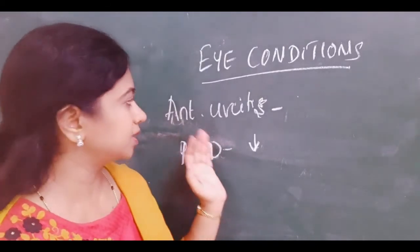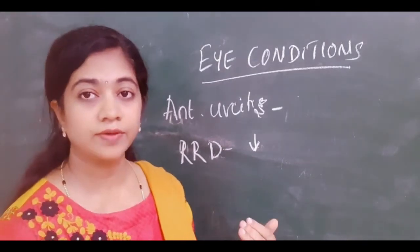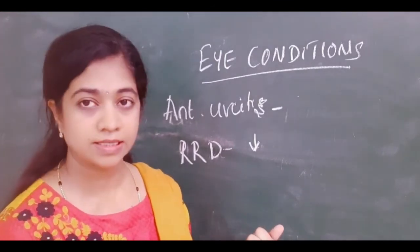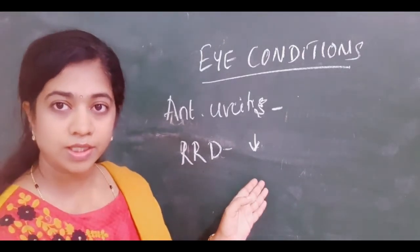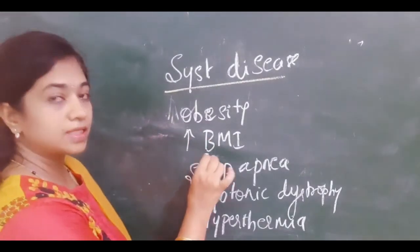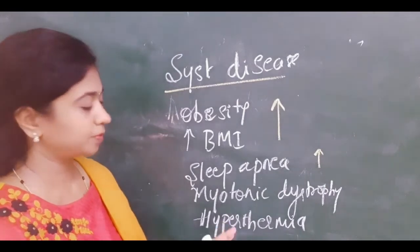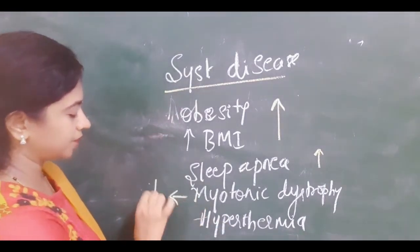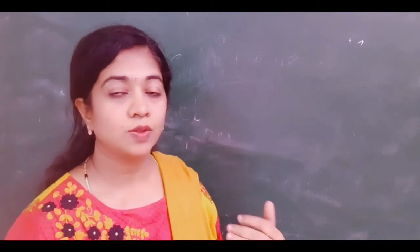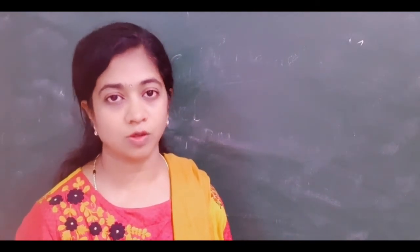Some eye conditions can also influence IOP. Anterior uveitis patients may have decreased IOP because of decreased aqueous production, or may have increased IOP because of release of inflammatory cells which block the trabecular meshwork. Rhegmatogenous retinal detachment patients will usually have decreased IOP. Some systemic diseases also influence IOP: obesity and increased BMI tend to raise IOP, sleep apnea patients have increased incidence of primary open-angle glaucoma, myotonic dystrophy patients usually have decreased IOP, and hyperthermia can again increase IOP.